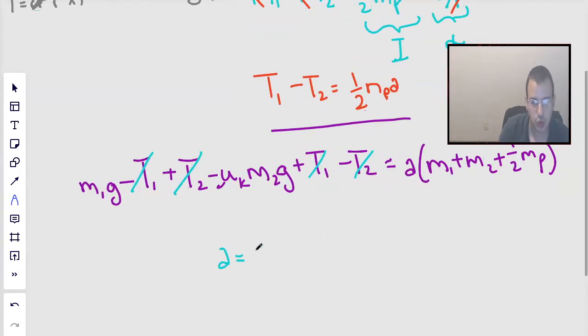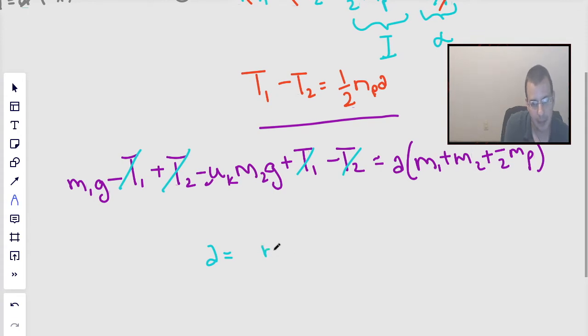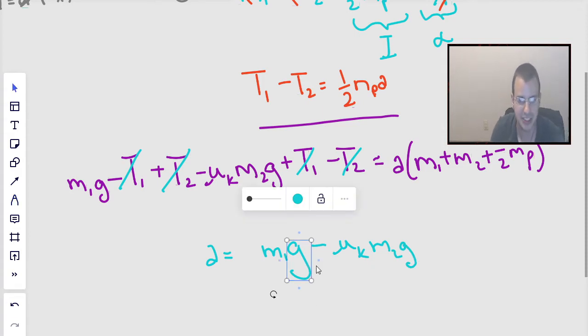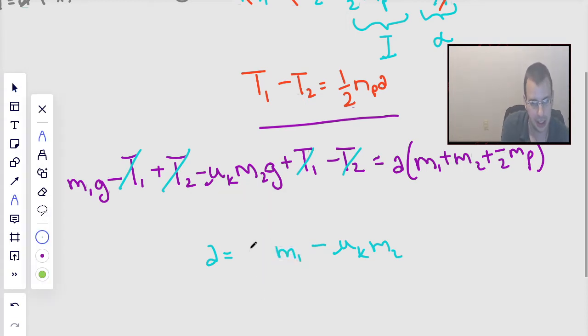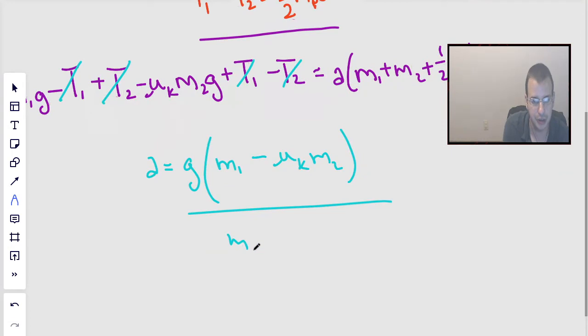Solving for acceleration, I'm going to get mass 1 times gravity minus coefficient of kinetic friction times mass 2, also times gravity. So I could factor out the gravity, that's exactly what I'm going to do—terrible boardsmanship, you will get over it—divided by the sum of all masses plus the moment of inertia sort of: mass 1 plus mass 2 plus one half mass pulley.